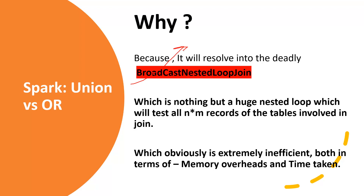What is the broadcast nested loop join? As the name indicates, it's nothing but a huge nested loop which tests all N cross M records of the two tables involved in the join. It runs a loop N cross M times, where N is the number of records in table 1 and M is the number of records in table 2. This is obviously extremely inefficient, and if your tables are large, it will result in out-of-memory exceptions.